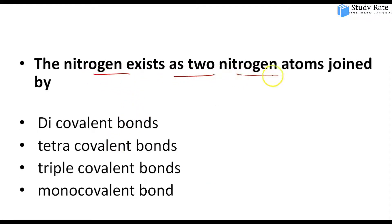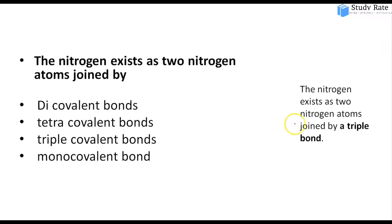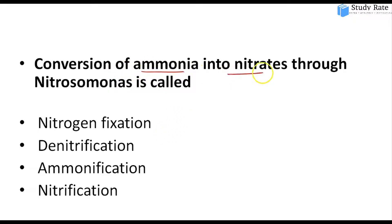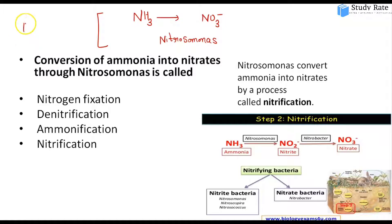Fifth question: How are two nitrogen atoms joined? In atmosphere, nitrogen is found as N₂, where two nitrogen atoms are bonded by three covalent bonds — a triple covalent bond. Sixth question: Conversion of ammonia into nitrate with the help of Nitrosomonas bacteria is called nitrification.